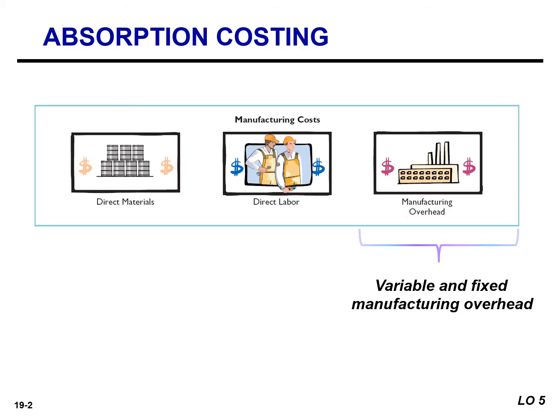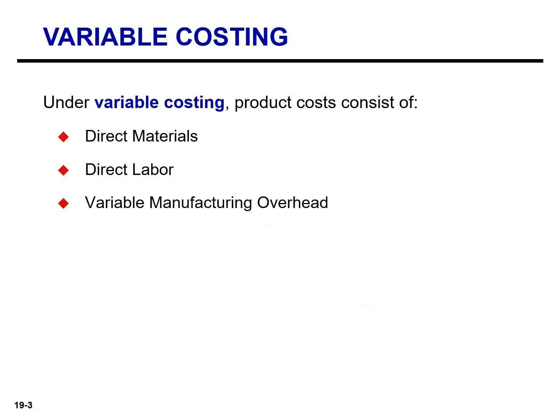Absorption costing is the approach used for external reporting under generally accepted accounting principles. An alternative approach is to use variable costing. Under variable costing, only direct materials, direct labor, and variable manufacturing overhead costs are considered product costs.